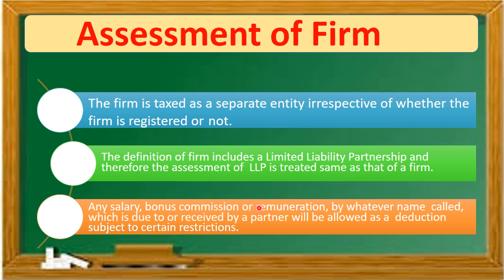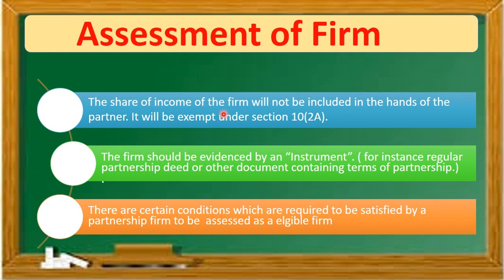Any salary, bonus, commission or remuneration by whatever name called which is due to or received by a partner will be allowed as a deduction subject to certain restrictions. The share of income of the firm will not be included in the hands of the partners, because the partnership firm has already paid the tax on such income.